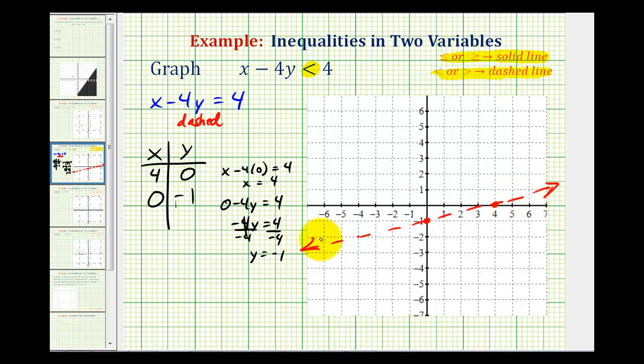And now we need to figure out whether we're going to shade above the line or below the line. And because this is not solved for y, to be safe let's use a test point. And the easiest point to test is the origin as long as the line does not pass through the origin.